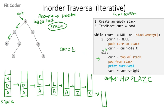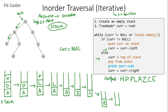Current points to the right of C which is E. Current is not null so we push E and set current to the left of E, which is null. We check the while condition: current is null but the stack is not empty, so we set current to the top of the stack, pop from the stack — stack is empty — print E, and set current to the right of E which is null. We come into the while condition: current is null and the stack is also empty, so the while loop terminates. This is our inorder traversal.